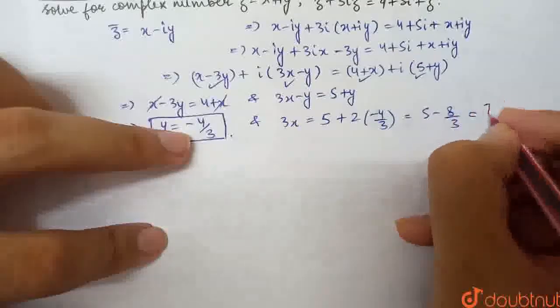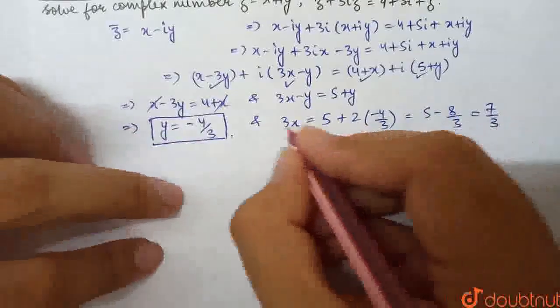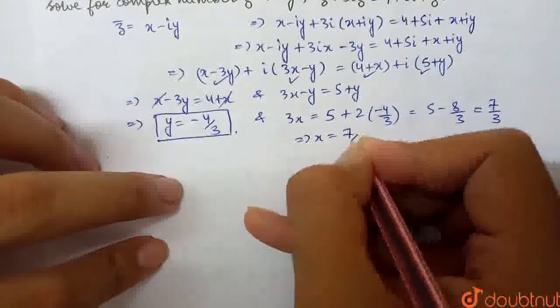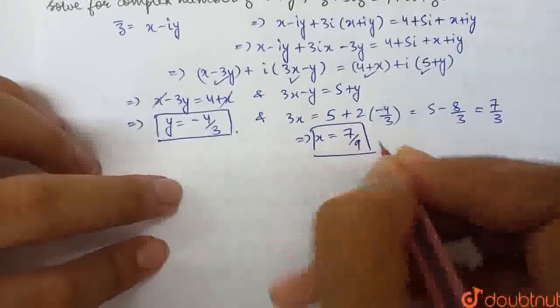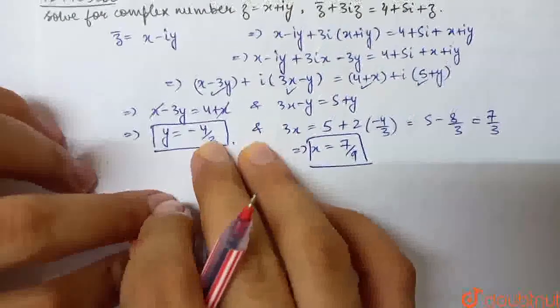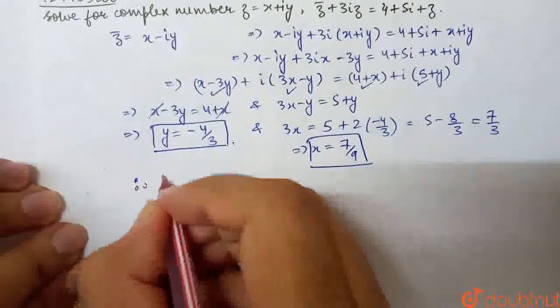5 minus 8 by 3. So what have I got? 5, 3 times 5 is 15, minus 8 is 7 by 3. So what have I got here? X value, side change, X will be 7 by 9. This will be 7 by 9.